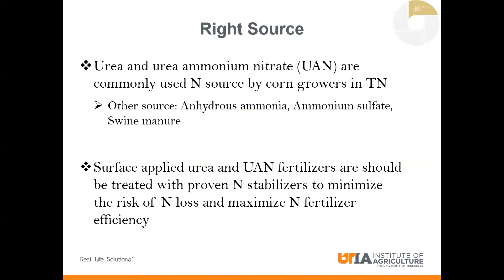In terms of the right source, in Tennessee, urea-based fertilizers are commonly used by corn growers. Unfortunately, this fertilizer source is also susceptible to ammonia volatilization if surface applied and not incorporated into the soil. To make this source very useful, it's important to treat that urea-based fertilizer with a proven nitrogen stabilizer — it will minimize the risk of nitrogen loss and maximize nitrogen fertilizer efficiency.